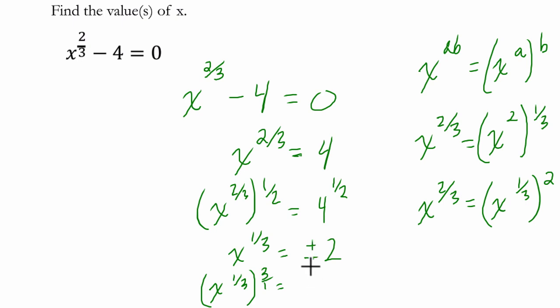And plus or minus 2 cubed could be 2 times 2 times 2 which is 8. Or negative 2 times negative 2 times negative 2 which is negative 8. So here we can finish by saying that x could be equal to positive or negative 8.